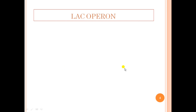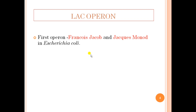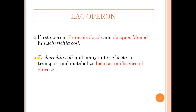Now that you know the overview of what is an operon, we will discuss the lac operon. Lac operon was the first operon to be studied and described by the Nobel laureates François Jacob and Jacques Monod in Escherichia coli. It is an operon present in E. coli and many other enteric bacteria. If glucose is not present in the cell and if lactose is present in the surrounding environment, the lac operon structural genes get expressed and the products help in the transport and metabolism of the sugar lactose.